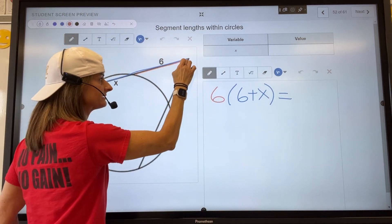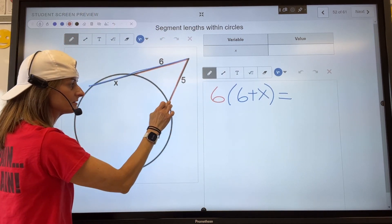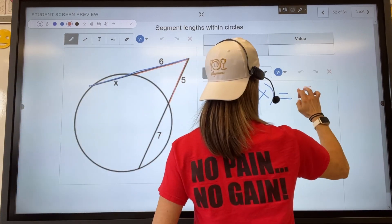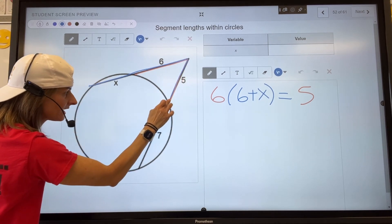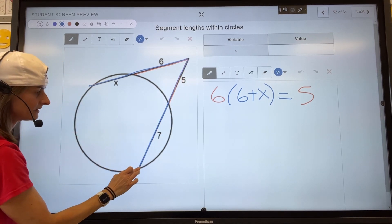Equals the exterior length of the other secant line, 5, times the entire length of the secant line, which is 5 plus 7, which is 12.